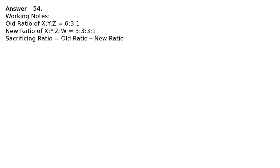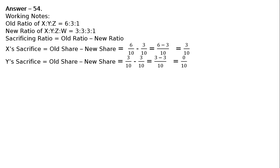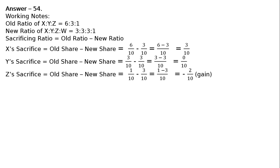Sacrificing ratio is equal to old ratio minus new ratio. X's sacrifice is equal to old share minus new share: 6/10 minus 3/10. LCM is 10, so 6 minus 3 = 3/10. Y's sacrifice is equal to old share minus new share: 3/10 minus 3/10, which equals 0/10. Z's sacrifice equals old share minus new share: 1/10 minus 3/10, which equals minus 2/10. This is a gain for Z.